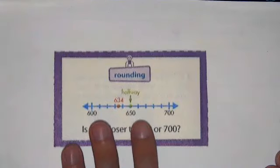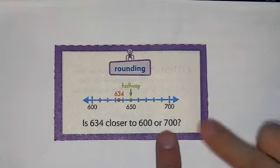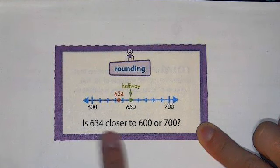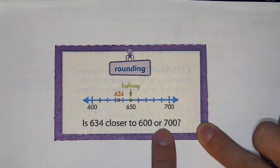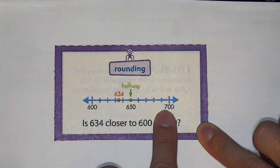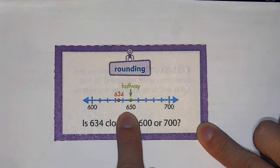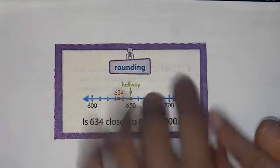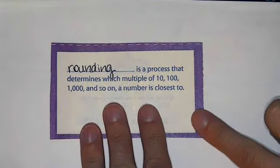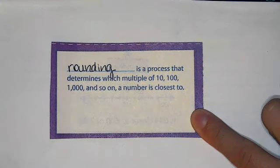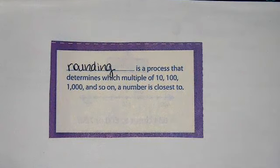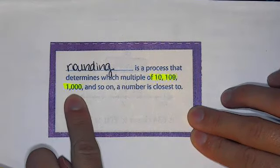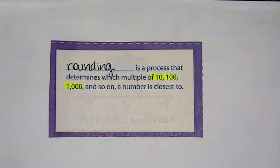Our vocabulary word is 'rounding.' I really like how they use this picture of the number line here, asking: is 634 closer to 600 or 700? We have 600, we have 700, and we found the halfway mark, which is 650. They plotted about where 634 was to round it. Rounding is a process that determines which multiple of 10, 100, 1000, and so on a number is closest to — and that refers to place values: the tens place, the hundreds place, the thousands place, and so on.